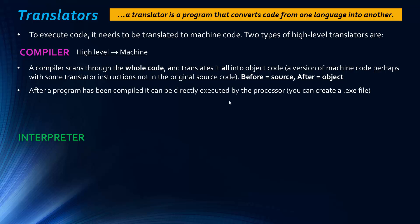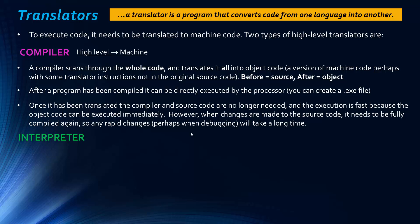After you compile a program, the processor can directly execute it, and you can create an executable file. Once it's been translated you no longer need the compiler or the source code — you can just send people the executable file. This makes it harder to reverse engineer, unlike an interpreter which always requires the source code. Execution is also fast because the object code can be executed immediately.